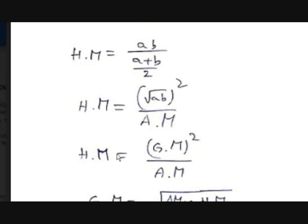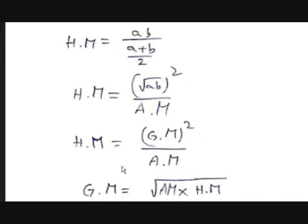Harmonic mean is 2ab/(a+b). You can rewrite that as ab / ((a+b)/2). So you can replace (a+b)/2 with AM, and ab with (√ab)², which is GM². Therefore, HM = GM² / AM. Switching AM to the other side gives AM × HM = GM².